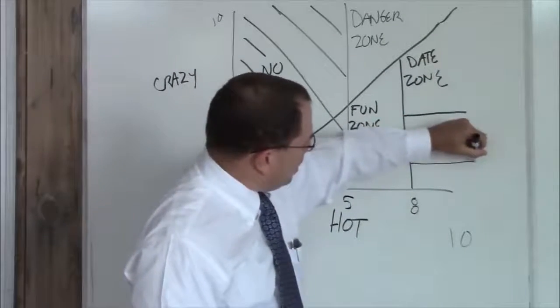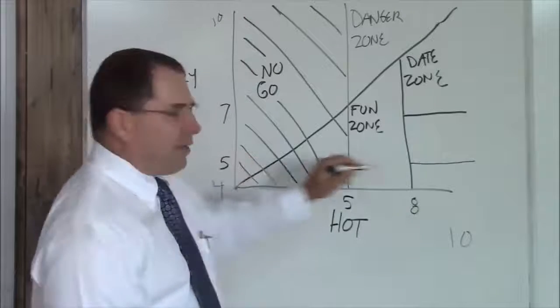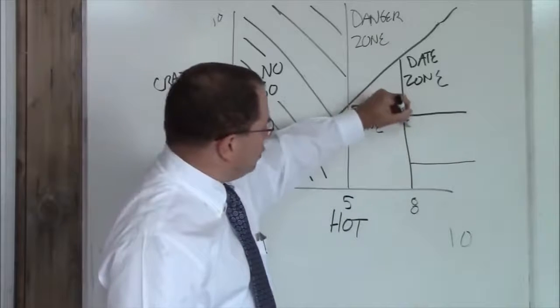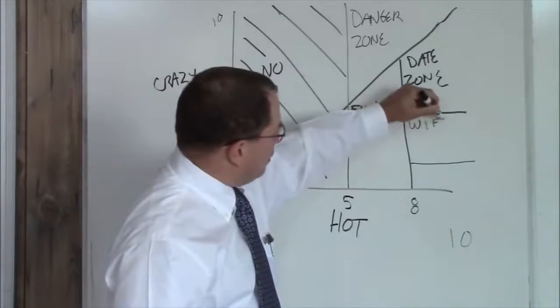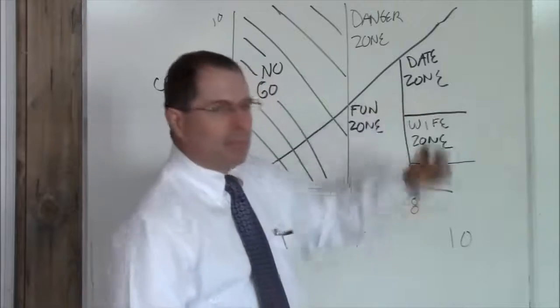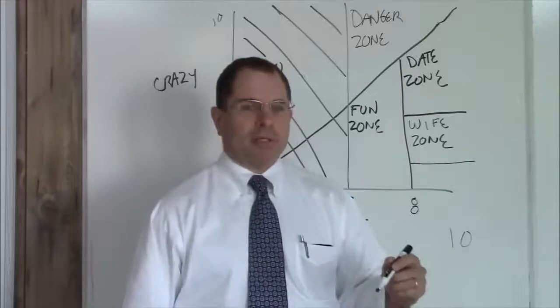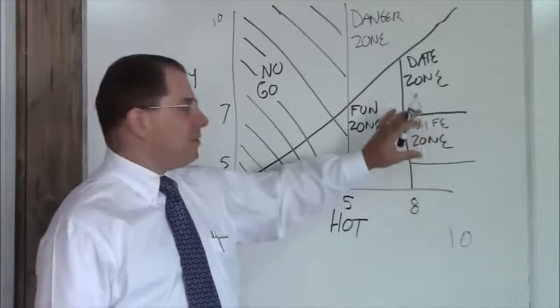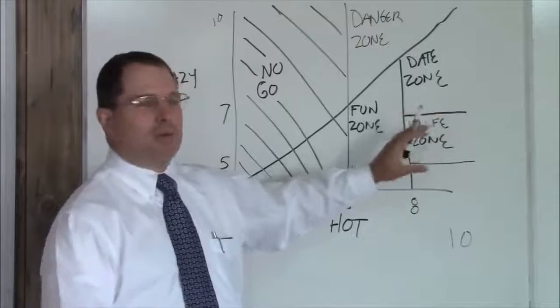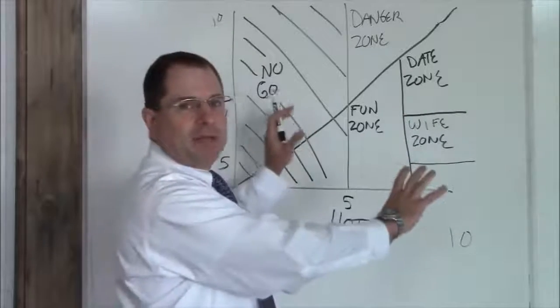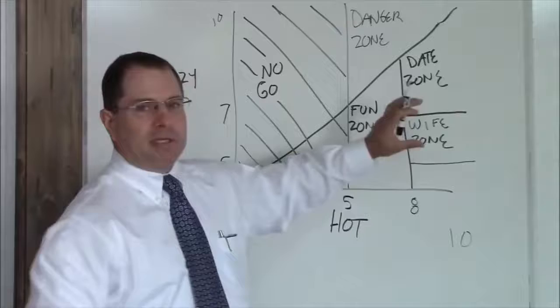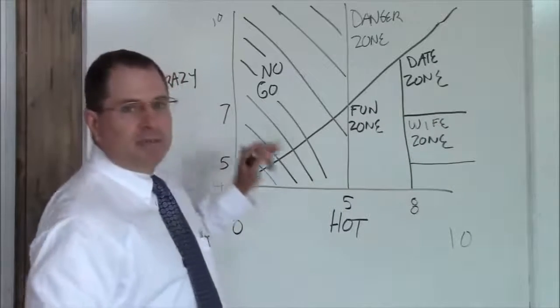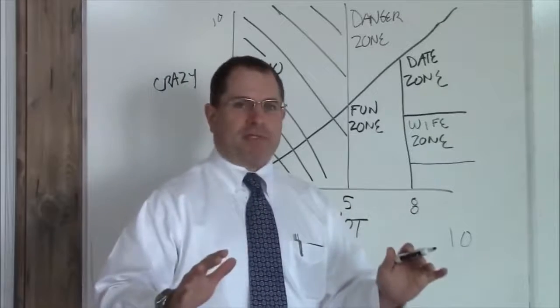Now, above an 8 hot, and between about a 7 and a 5 crazy. This is your wife zone. When you meet this girl, you should consider a long-term relationship. This zone is not scaled to size. This is a representation and not an actual, this is not a pie chart showing you how many of these people are out there. This is simply a representation of what you're after. You want to be 5 to 7 crazy, above an 8 hot. That's your wife's zone.